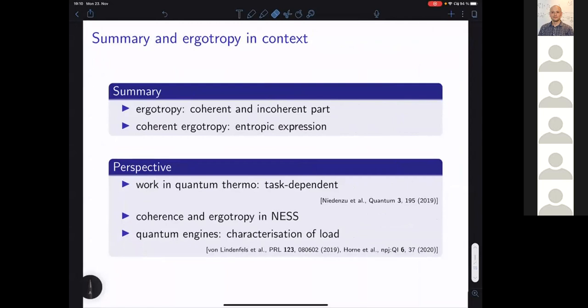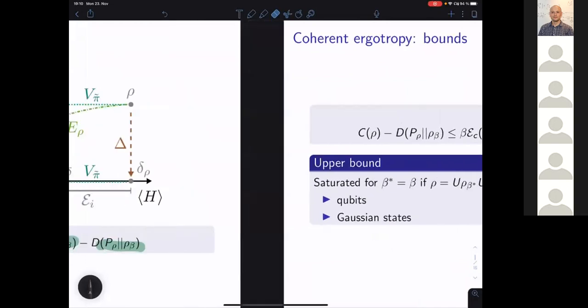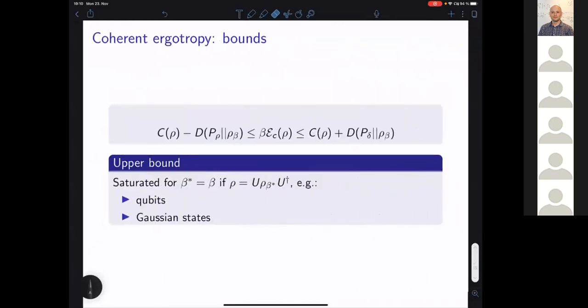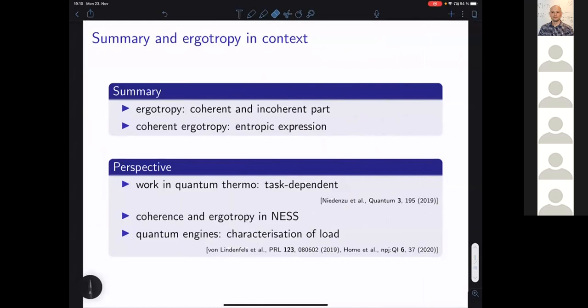It's also trivially true for Gaussian states, since any Gaussian state can be written as a unitary transformation on a thermal state. And so both of these are interesting examples of this. But of course, the temperatures have to match for this bound to be saturated. And so this is in a nutshell what I wanted to say about the coherent ergotropy. To summarize again, we are able to split up in a precise fashion the ergotropy into a coherent and an incoherent part. The coherent ergotropy, I should point this out, is of course an energetic quantity, but the expression for it is entirely composed of entropy.